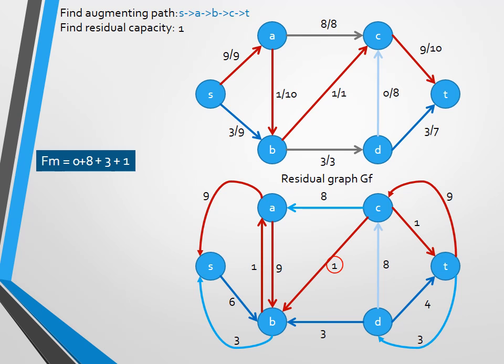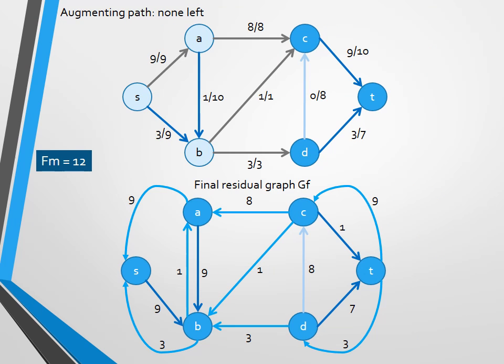And we go looking for another augmenting path, only this time we find none. As you can see with the grey edges, there is no possible way to get to T from S. So the algorithm has terminated and is returning the value 12 for the maximum flow.